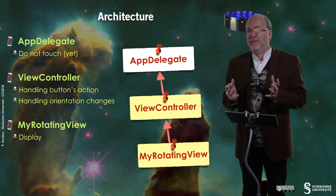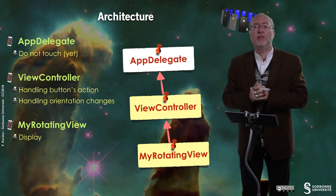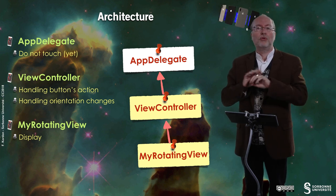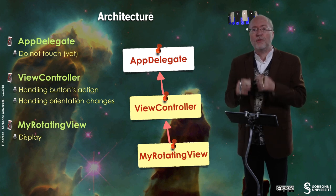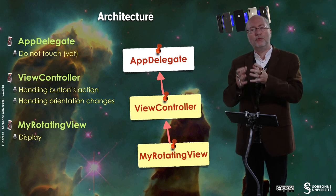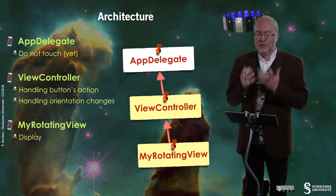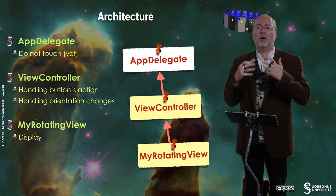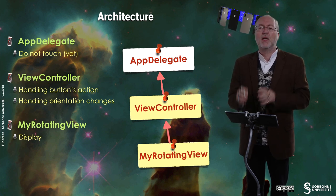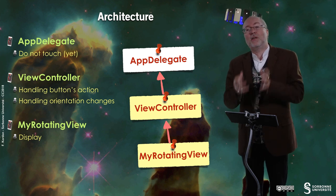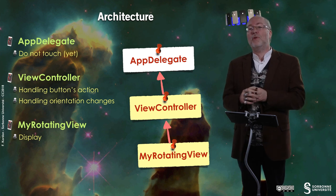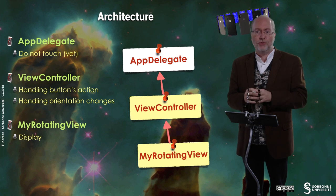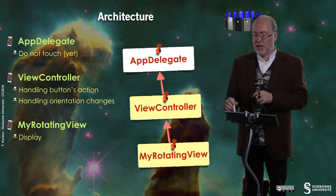Let's have a look at the architecture of the application. You basically have three files, and two of those already exist in the project. The AppDelegate you don't touch for now, but later in this course we will deal with it. Then you have the ViewController, which handles the button action and the change of orientation — typically done at the ViewController level. Since the View is not built using Storyboard, you will create a new class called MyRotatingView that handles the display of the elements composing the View.